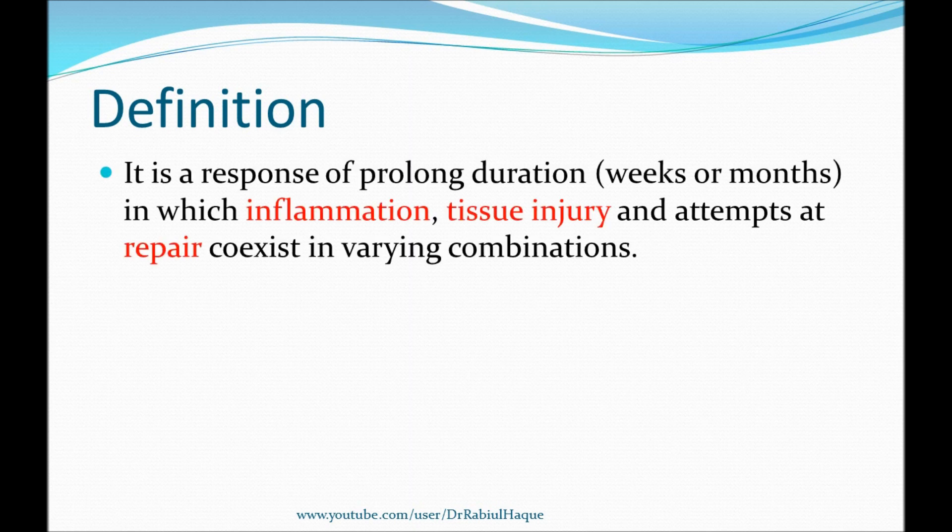First question: what is chronic inflammation? How can we define it? In your textbook you will see a very long definition of chronic inflammation, and I will tell you that now, but don't get scared because I will explain this definition line by line afterwards. Chronic inflammation can be defined as a response of prolonged duration, usually for weeks or months, during which inflammation, tissue injury, and attempts at repair co-exist in varying combination.